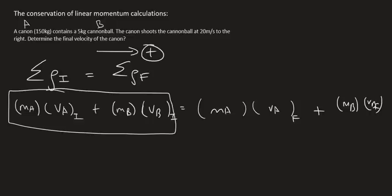So the mass of A, which we said is our cannon, is 150, but its velocity is zero. Because before the cannon shoots, the cannon and the cannonball are just resting there. There's no velocity. And then the mass of the cannonball is five, and it also has a velocity of zero.